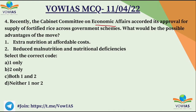Recently, the Cabinet Committee on Economic Affairs accorded its approval for the supply of fortified rice across government schemes. The possible advantages include: first, extra nutrition at affordable cost; and second, reduced malnutrition and nutritional deficiencies. Options: A) 1 only, B) 2 only, C) both 1 and 2, D) neither 1 nor 2. The correct option is C — both 1 and 2 — because fortified rice provides extra nutrition through rice at very affordable cost and reduces malnutrition and nutritional deficiencies, a major problem in rural India.